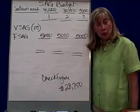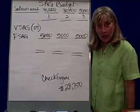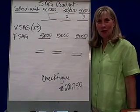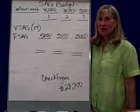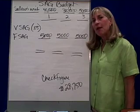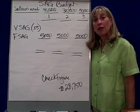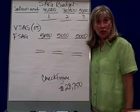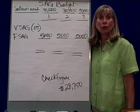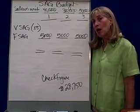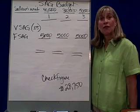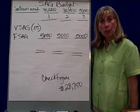We've done the sales budget. We've done the production budget. We've done the materials budget for water. We've done the direct labor budget. We've done the overhead budget, and most of those budgets were based on production — in other words, how many bottles of water did we produce? We now turn our sights on the selling, administrative, and general budget.